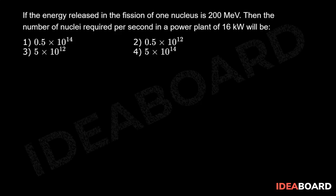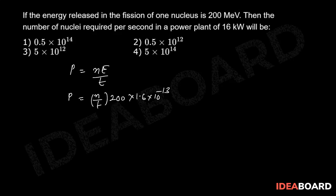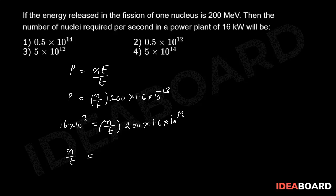Power P equals N/t multiplied by E. Therefore, P = (N/t) × 200 × 1.6 × 10⁻¹³. The power is given as 16 × 10³, so: 16 × 10³ = (N/t) × 200 × 1.6 × 10⁻¹³. Therefore, N/t = 5 × 10¹⁴.